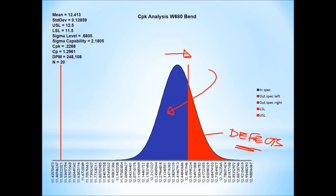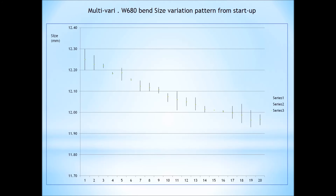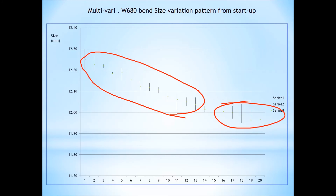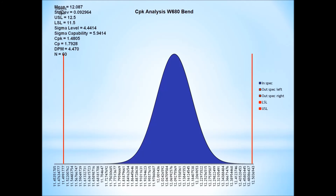Once the engineer looked at this, the person running the project said: this is easy — I just have to set the starting point lower, so it starts at top tolerance inside and then drifts to mid. That's an easy thing to do. Personally, I might have brought it down a little bit lower so the distribution sits more centrally. But to be fair, that's going to solve the problem — they don't need to do anything much cleverer than that.